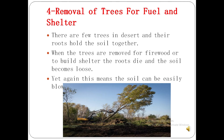The fourth factor is the removal of trees for fuel and shelter. People who live near forested areas use trees to fulfill their needs. There are few trees in desert areas, and their roots hold the soil together. When trees are removed for firewood or to build shelter, the roots die and the soil becomes loose, easily blown away by wind, and the land becomes desertified.